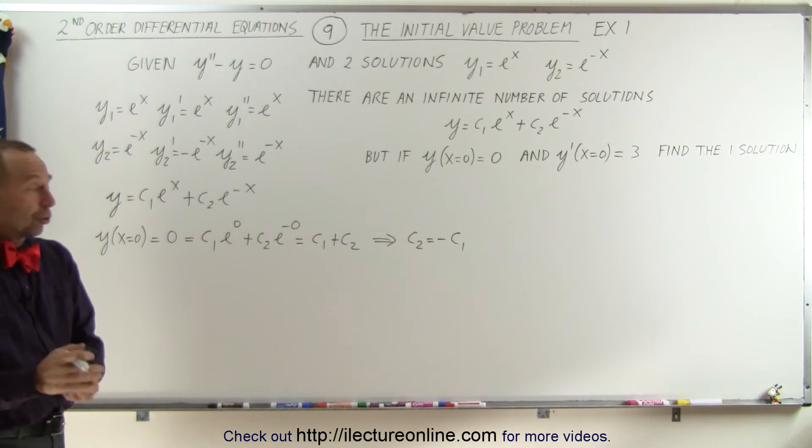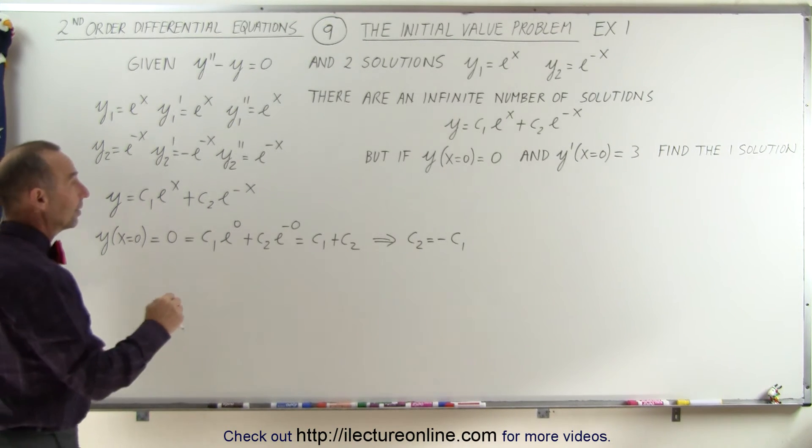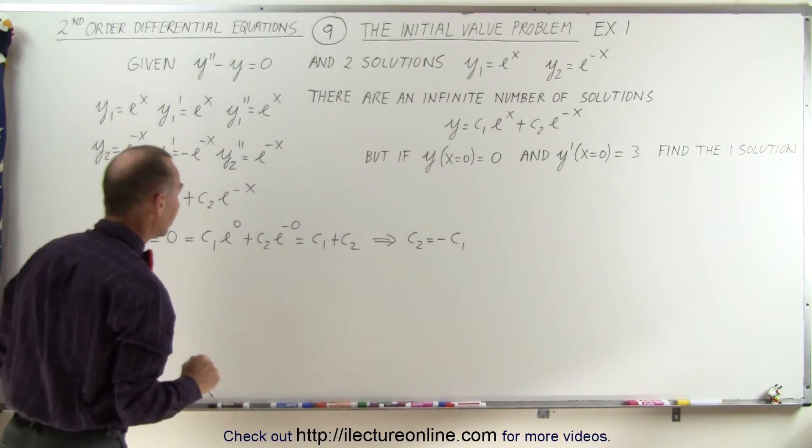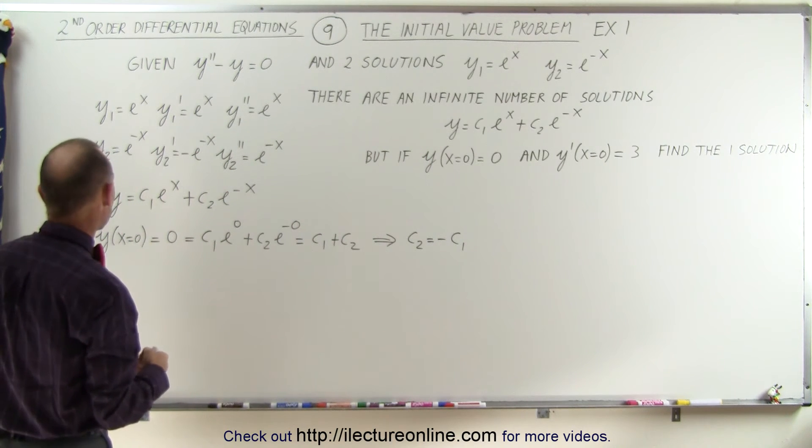That's not enough to determine what c1 and c2 are. It just puts one restriction on that. We're now going to use the second condition, the second initial condition, to find what c1 and c2 actually are.